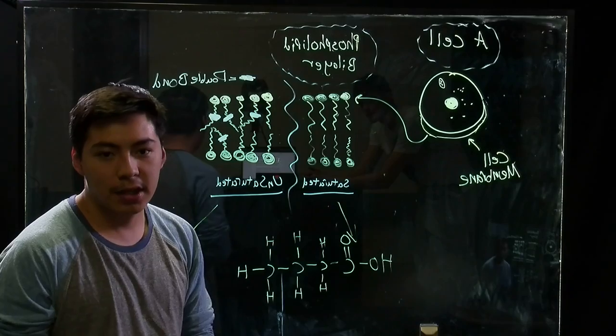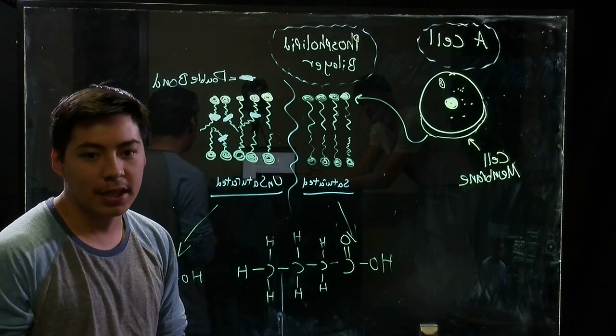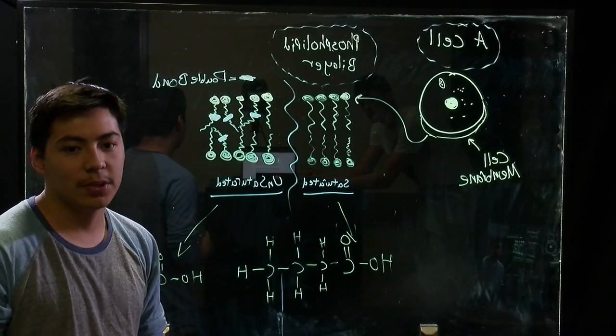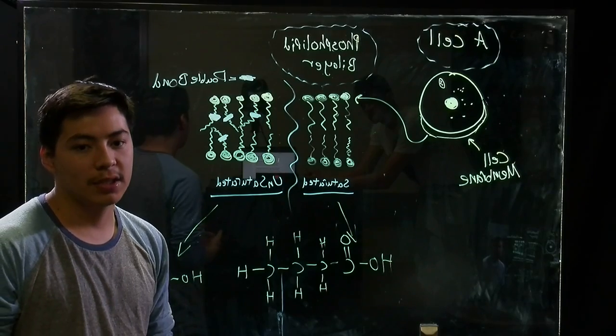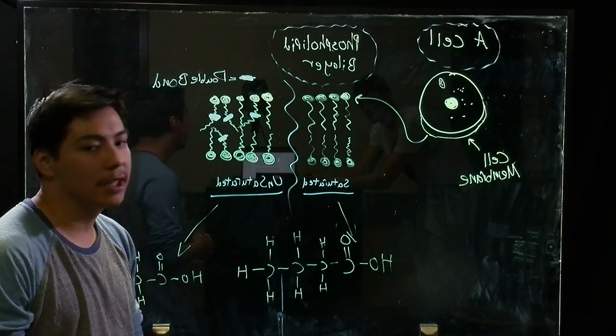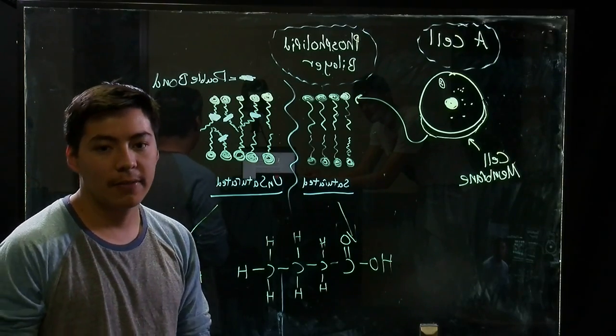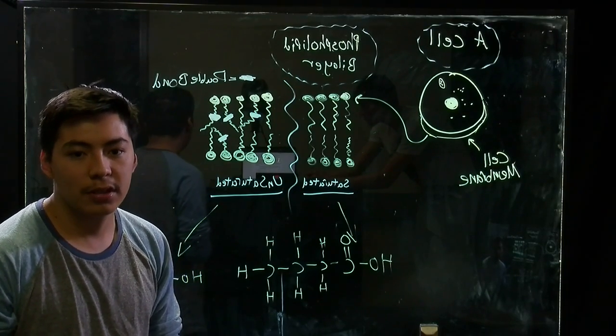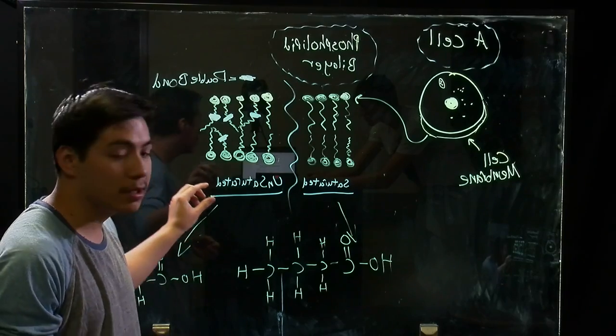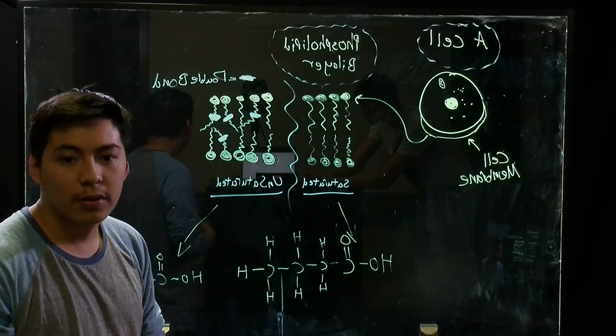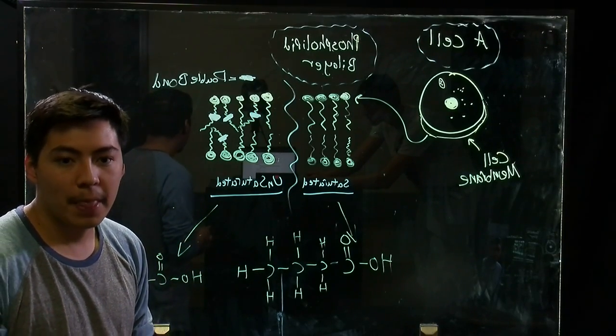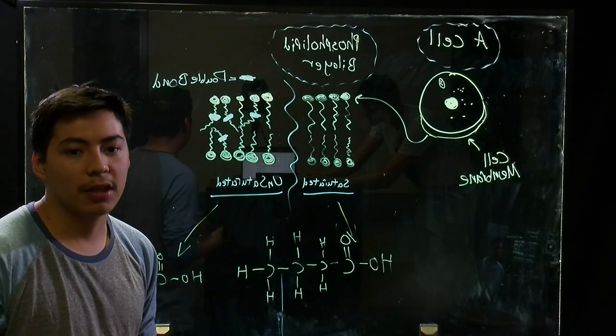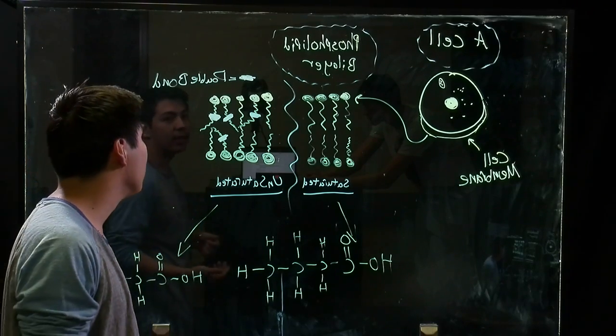The saturated fatty acid tails are arranged in a way that maximizes interactions between tails. These interactions decrease fluidity. The unsaturated fatty acids, on the other hand, have more distance between the tails, and so they have fewer intermolecular interactions and more fluidity overall.